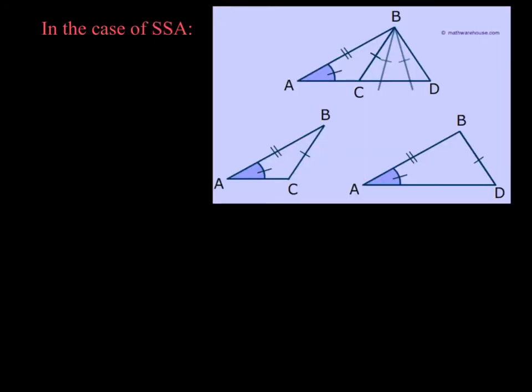In the case of side-side-angle, you can see that AB is the same length in both triangles, this side here is the same as that side over there, and this angle is the same size in both triangles. But clearly, two different non-congruent triangles can result from having a side-side-angle.